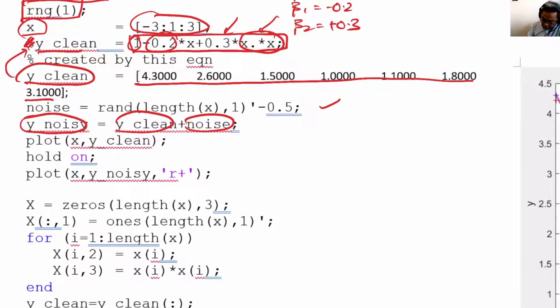Now I plot x and y_clean, and x and y_noisy. This will be in blue, this will be in red, and let us see the figures.